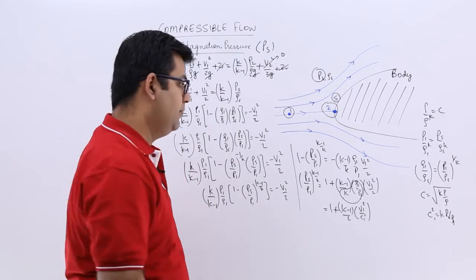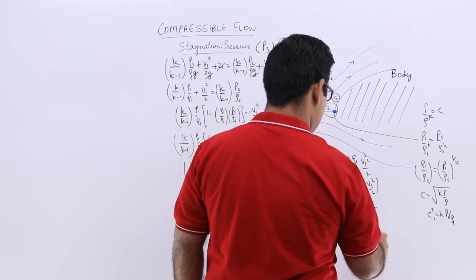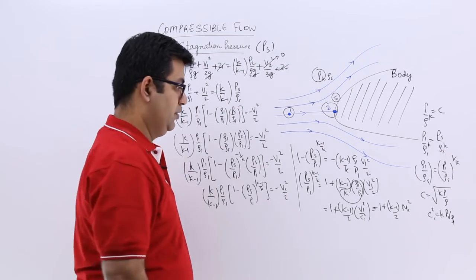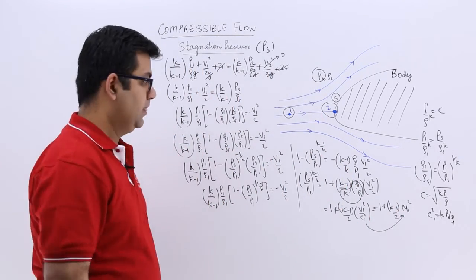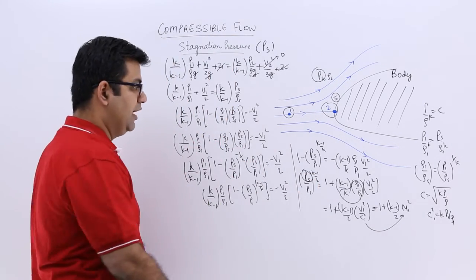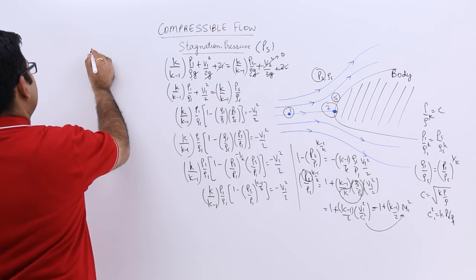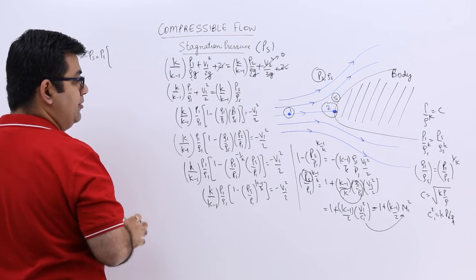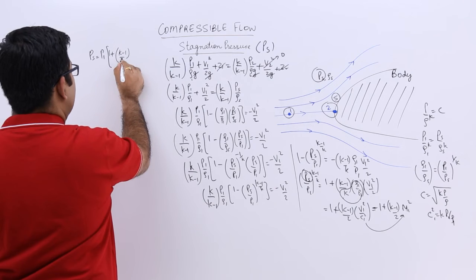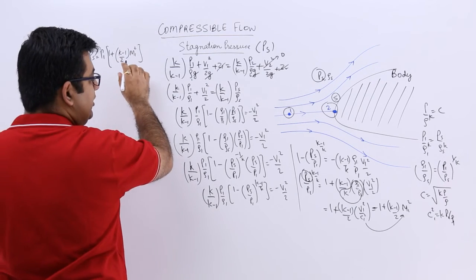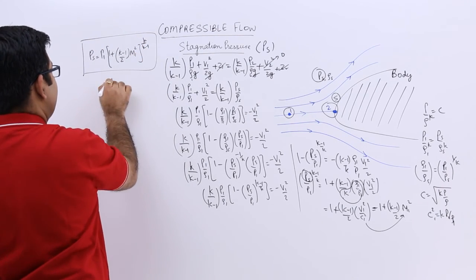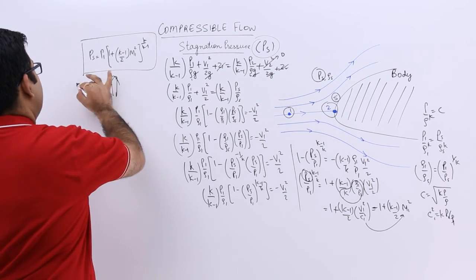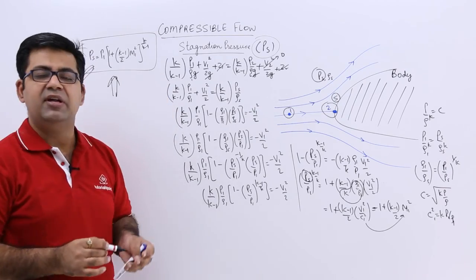Now, v by c is the Mach number — specifically M1 at section 1 — so this becomes 1 plus (k minus 1 by 2) into M1². From here, taking the power to the other side, we get the final formula: ps equals p1 times (1 plus (k minus 1 by 2) into M1²) to the power k upon k minus 1. This is the mathematical formula to calculate the stagnation pressure. Let's move on to the next video and talk about the calculation of the stagnation temperature.